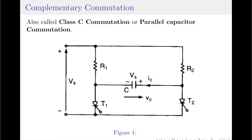The complementary commutation is also called as Class C commutation or parallel capacitor commutation. In this commutation technique, the firing of one thyristor commutates the other one.